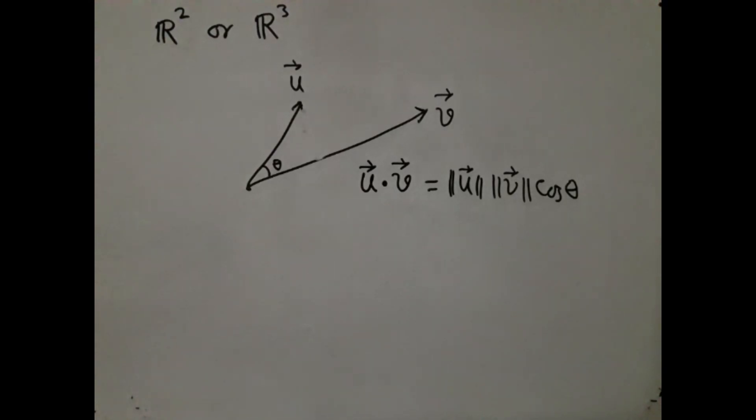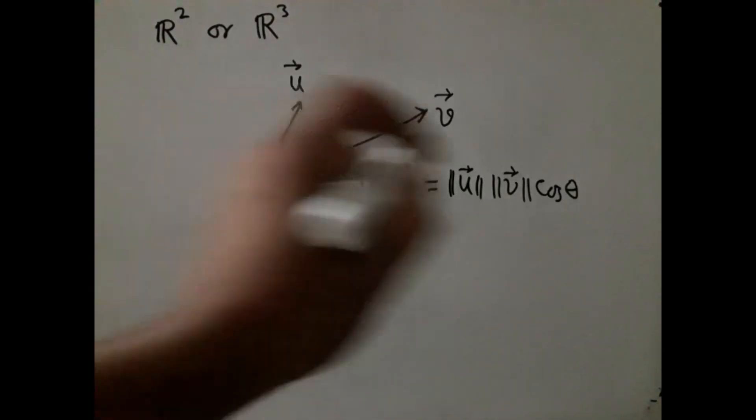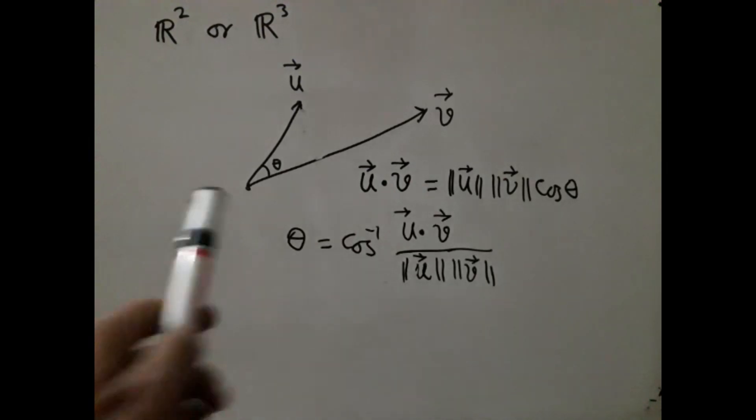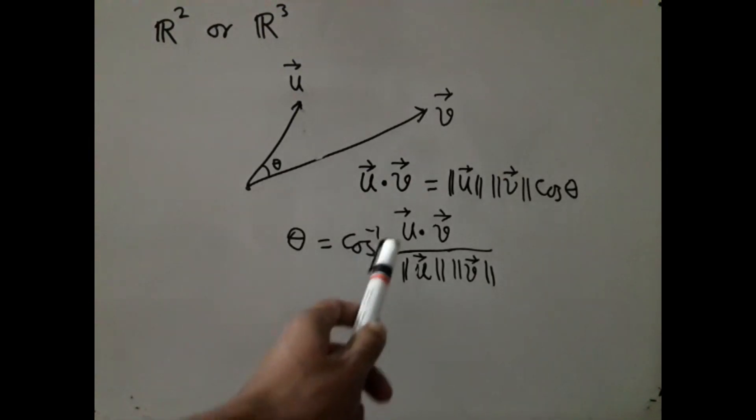Now, this allows us to define the angle theta, to obtain the angle theta in terms of the inner products and norms in the following way: θ = cos^(-1)(u·v / ||u|| ||v||).